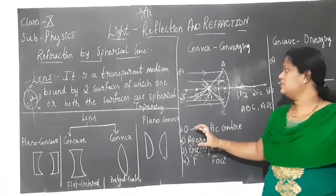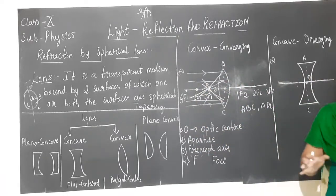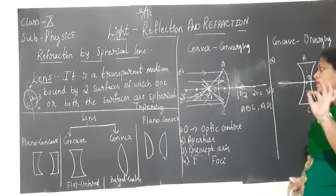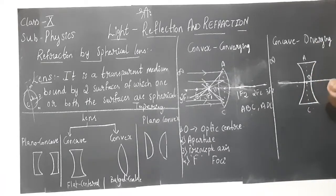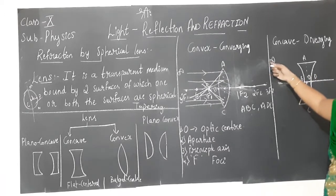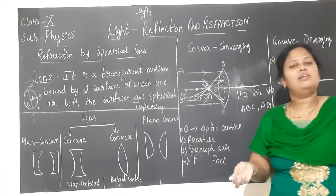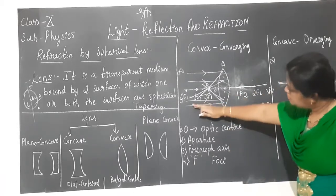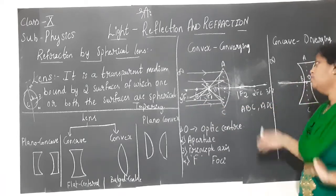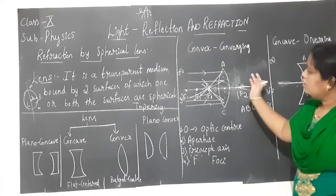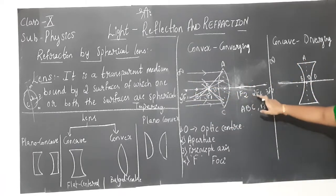In the case of a convex lens, the rays of light which are falling on the lens will converge or meet at one point — hence it is called a converging lens. Please refer to the textbook for the ray diagrams. Concave lens is a diverging lens; two surface areas are available for the process of refraction to take place.